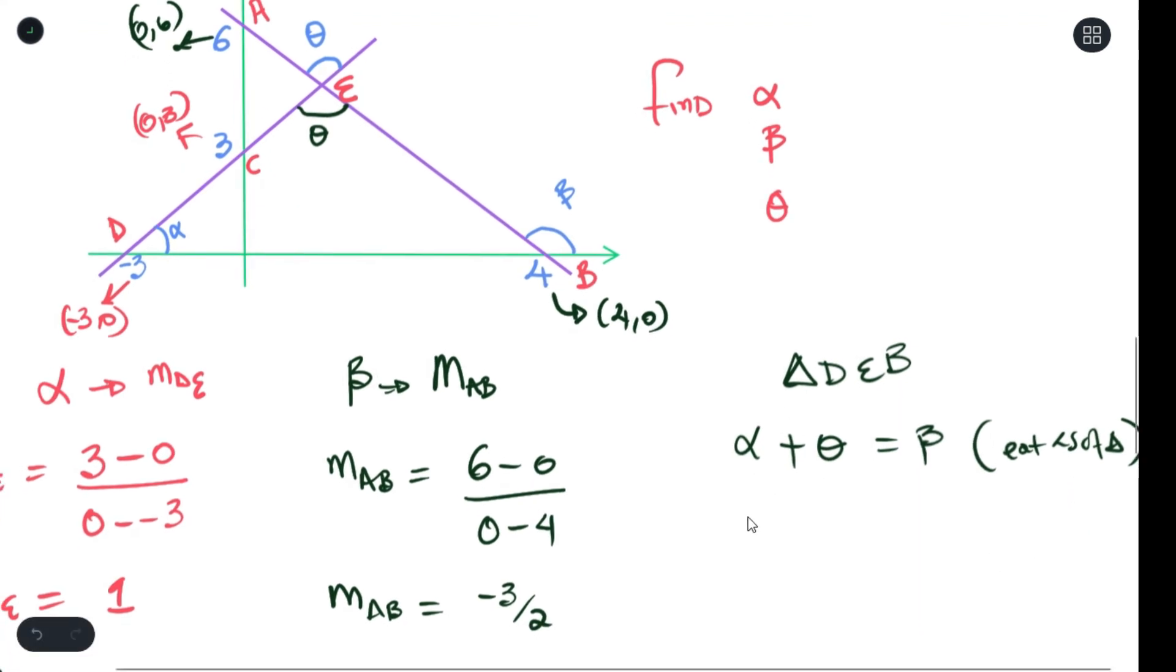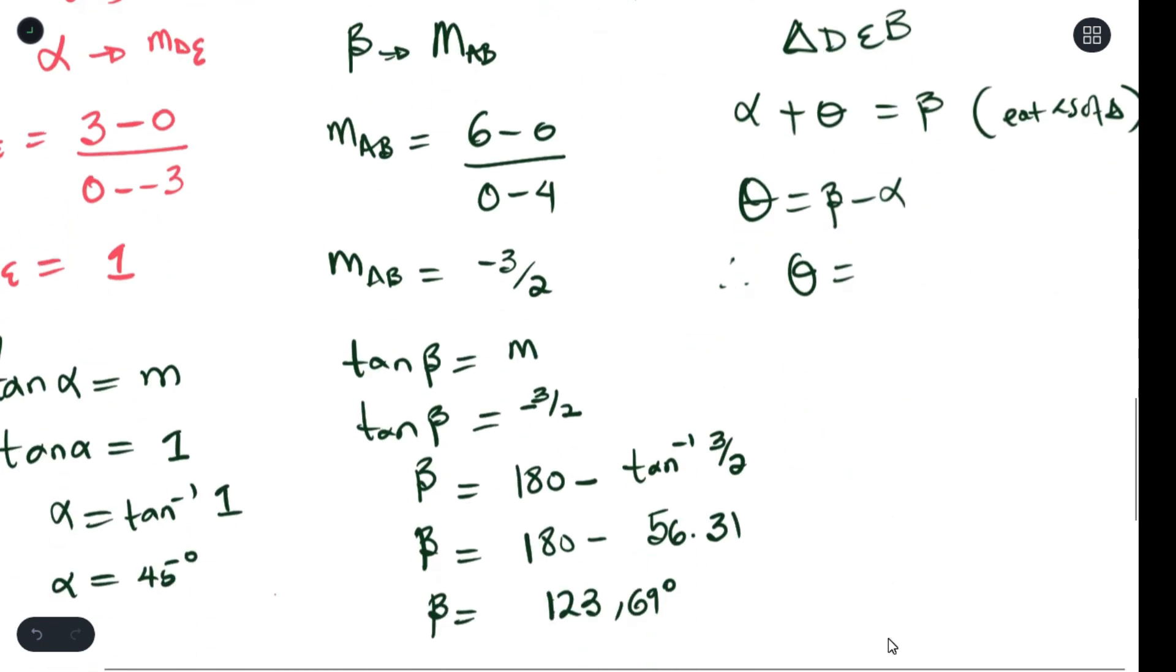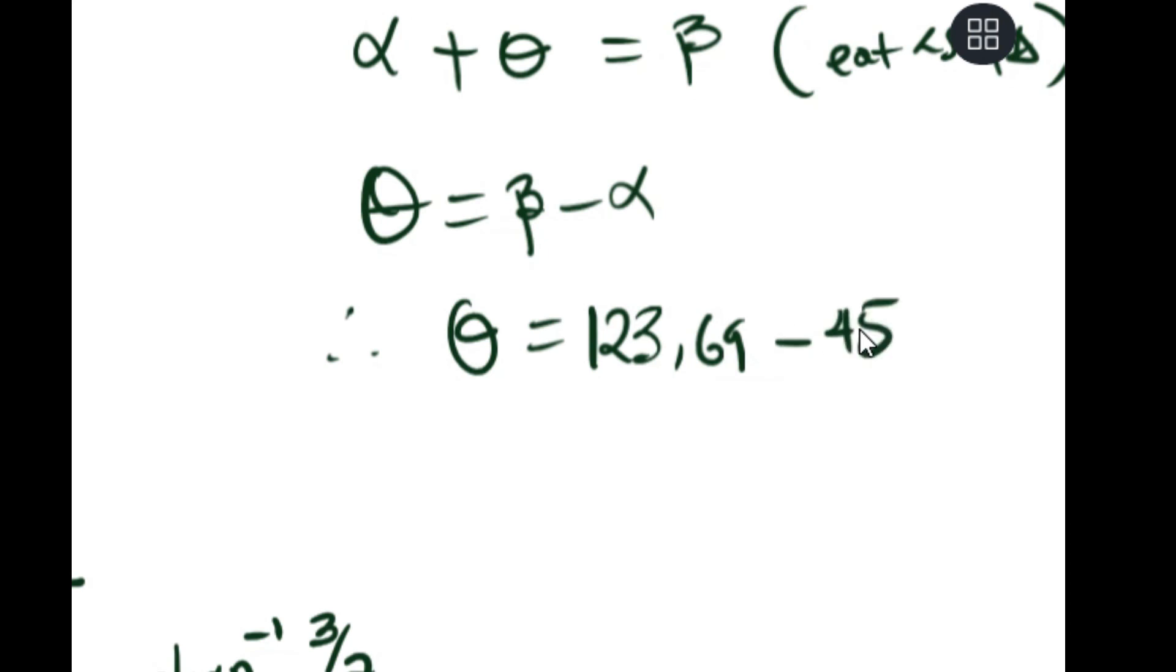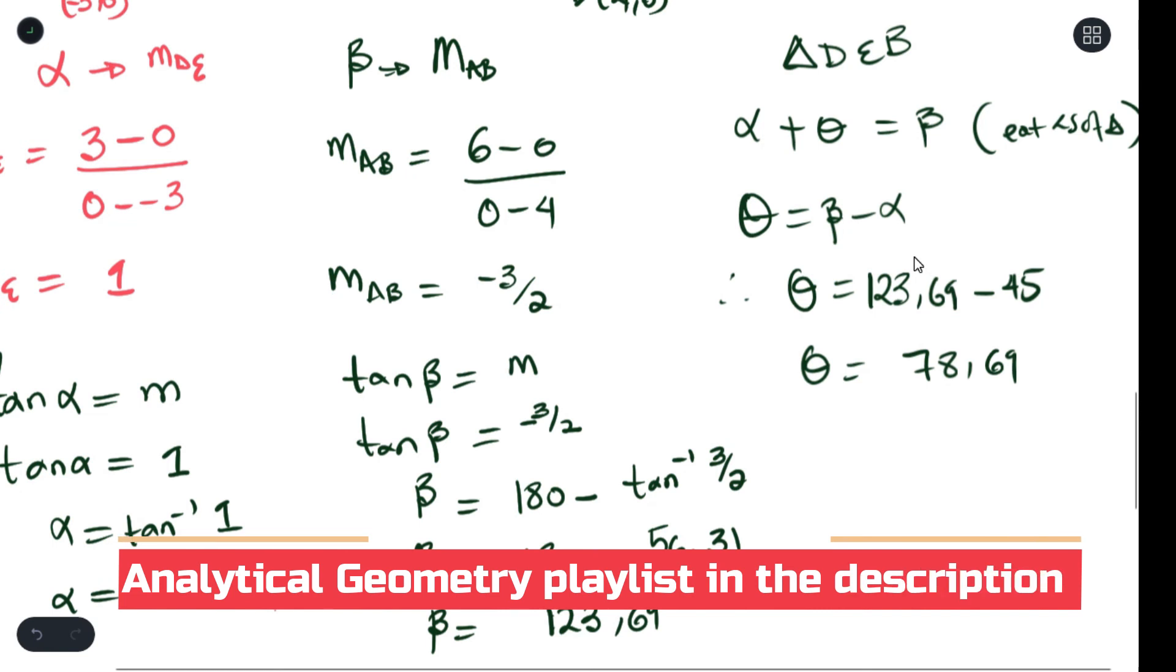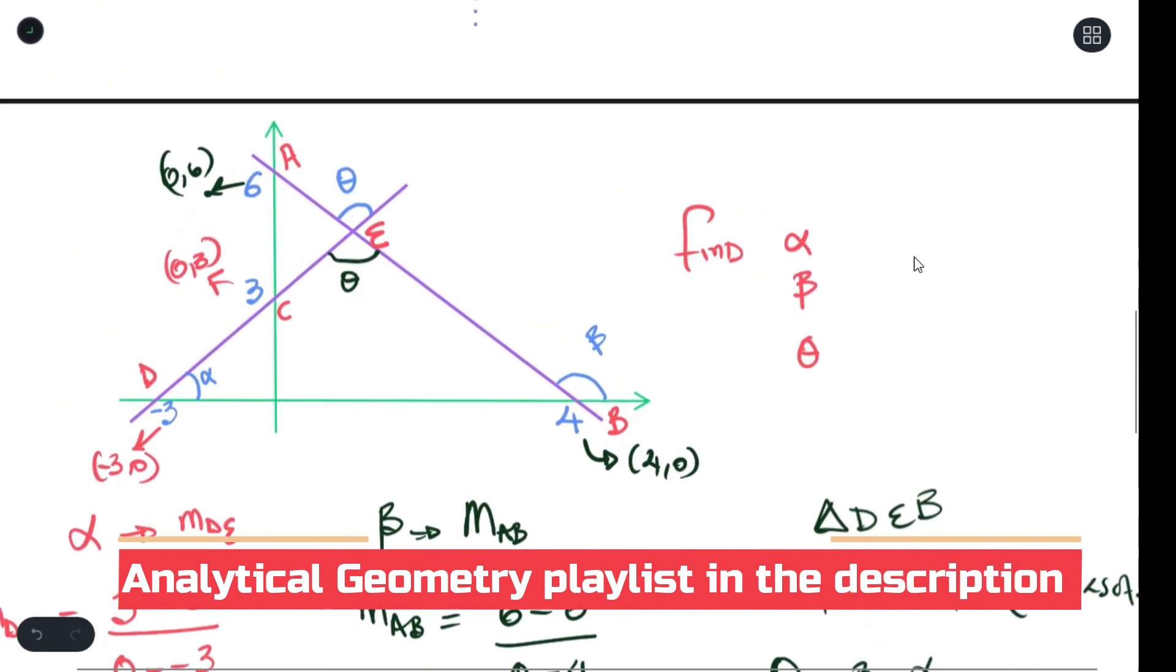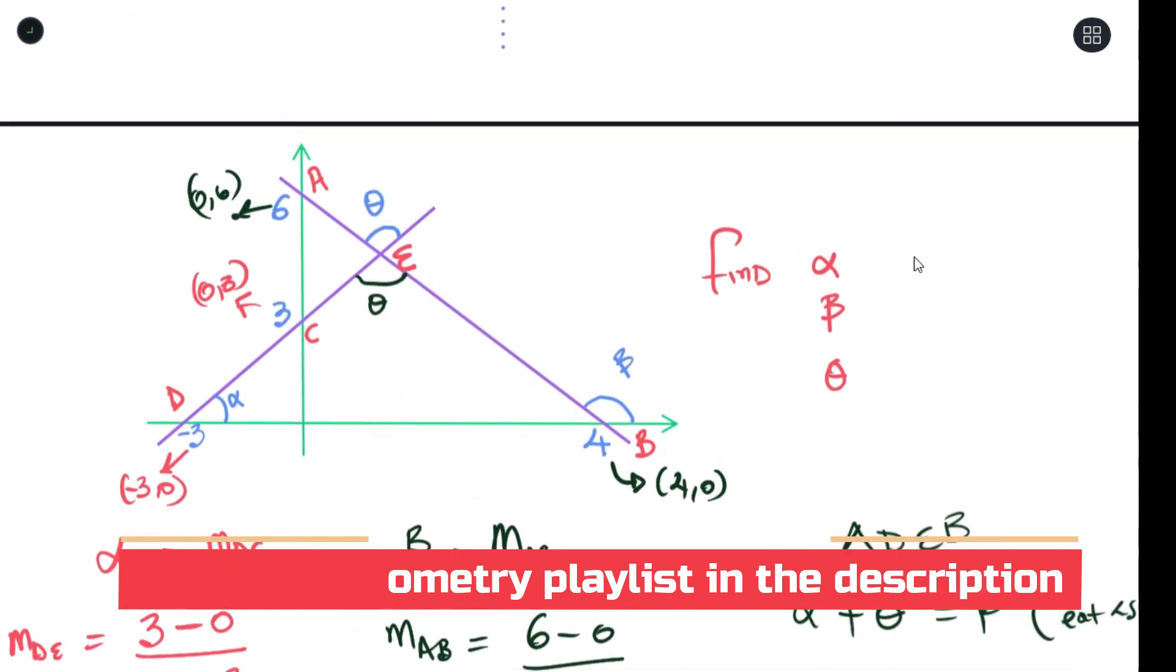With that it helps us to get our value for theta. So if that's the case, theta which we're trying to get is equals to beta minus alpha. So therefore theta is 78.69 degrees. And that's it. So that will be your answer for theta. So this is exactly how you can use angle of inclination to find different angles in analytical geometry.